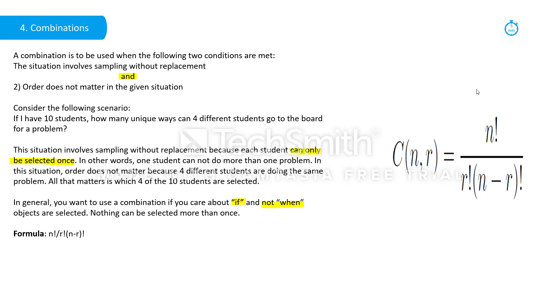And the other type of method we might choose is a combination. This is a situation that involves sampling without replacement, and order does not matter. This is our formula for a combination: n factorial over r factorial times n minus r factorial.